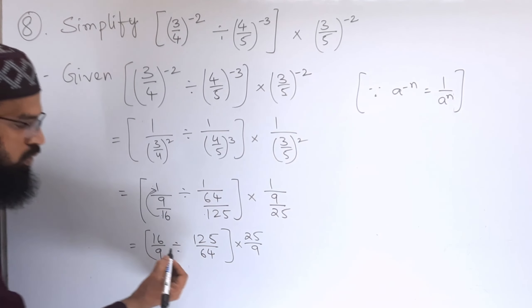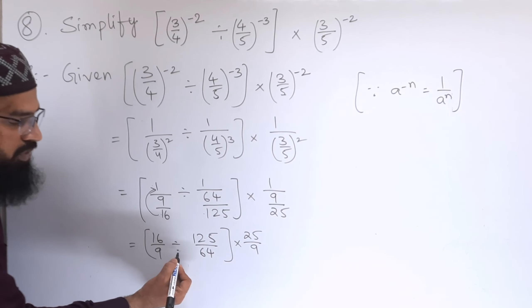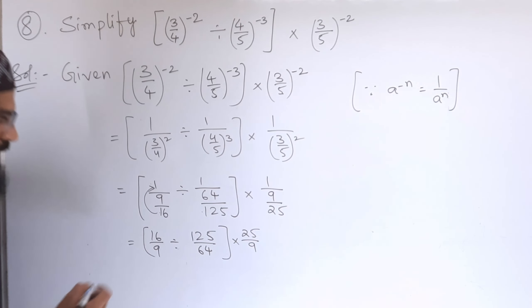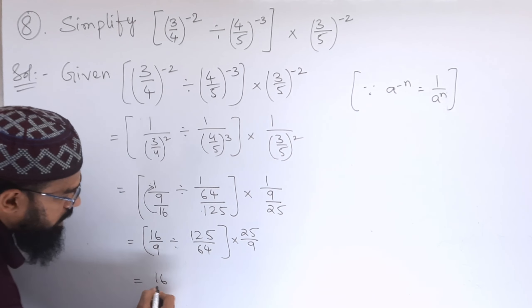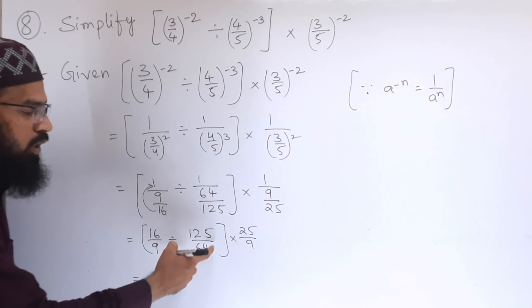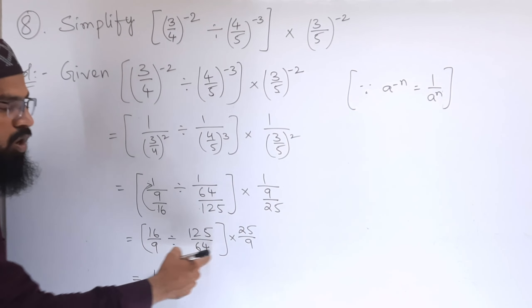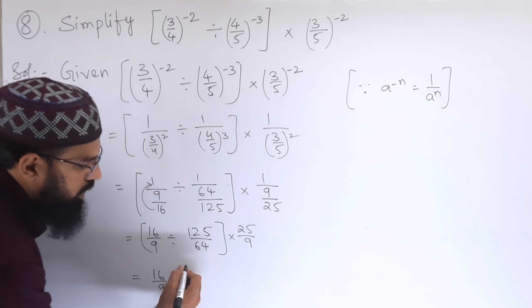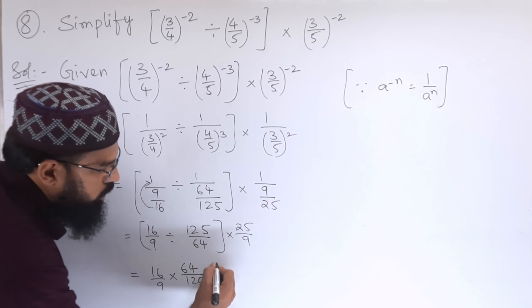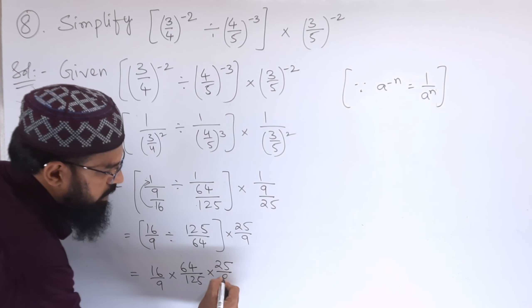Next, to get rid of this division, in place we will write multiplication. So 16/9, if we write multiplication, we need to write the reciprocal of this. The reciprocal of 125/64 is 64/125 into 25/9.